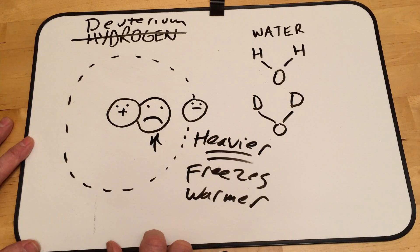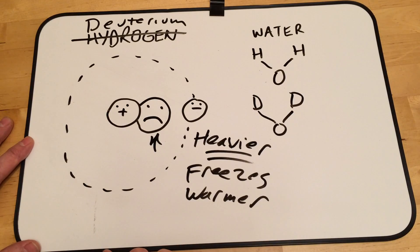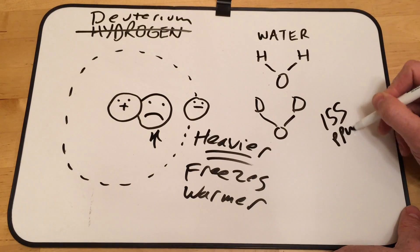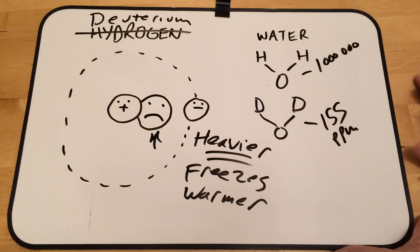And so that's the key. We want to get it to freeze and remove the deuterium that way. Now in most water, you're talking about 155 parts per million. So if there's a million parts of H2O, there's 155 parts of deuterium.